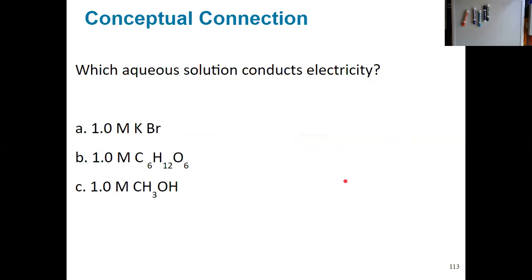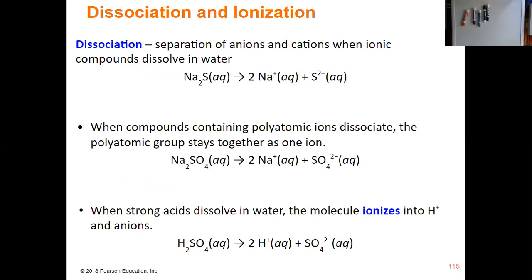Take a minute and answer this question for yourself: which aqueous solution conducts electricity? What you want to think about is which of these is either an ionic compound, a strong acid, or a strong base. Clearly it is KBr. Another term we need to think about is dissociation — the actual separation of your anions and cations when your ionic compounds dissolve. For example, when one formula unit of sodium sulfide dissolves, you have two sodium ions and one sulfide ion.